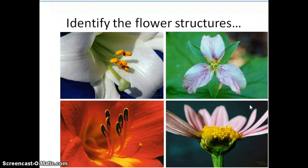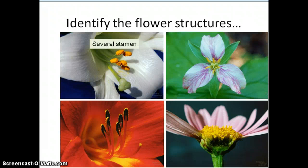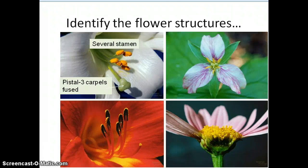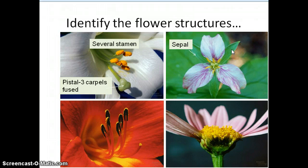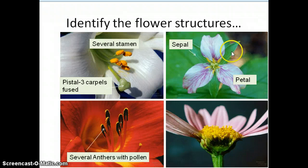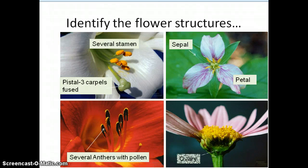Take a moment to pause and see how many structures you can identify, then review. Here there are several stamens, and right there is a pistil consisting of three different carpals fused together — you can still see the three different tops. These green leaves are actually sepals, and then we have the colorful petals. There's a great picture of anthers with pollen on them, and this last one has a cross-section showing an ovary. We'll stop here before going on to part two of this lecture.